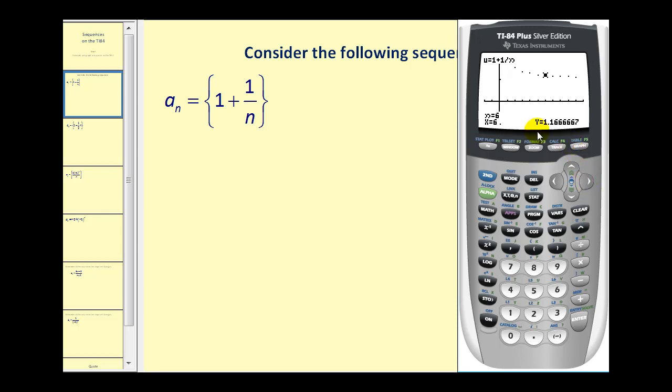Now it will be expressed in decimal form here, and there's not much we can do about it from this view. So we can see that it looks like the terms are approaching the value of one. Let's go ahead and take a look at another one.